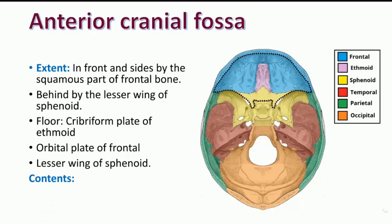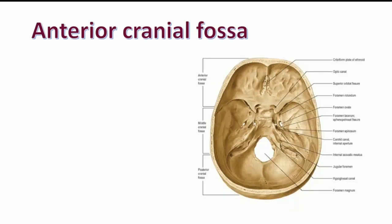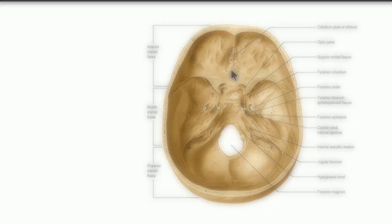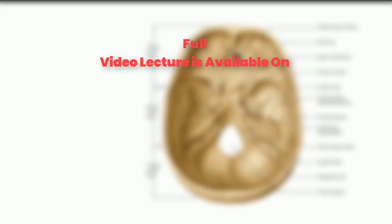As for the contents, it is mainly the frontal lobe of the cerebrum. Coming to the features of the anterior cranial fossa — the cribriform plate of the ethmoid is sieve-like, or perforated, through which the olfactory nerve filaments emerge from the olfactory mucosa lining the roof of the nasal cavity. So the cribriform plate of the ethmoid transmits the olfactory nerve filaments.